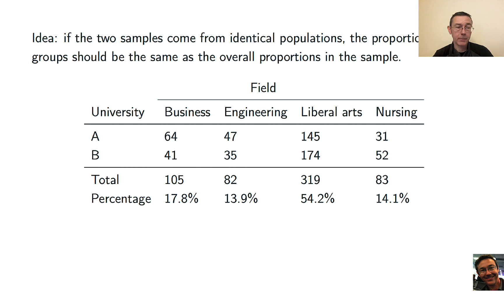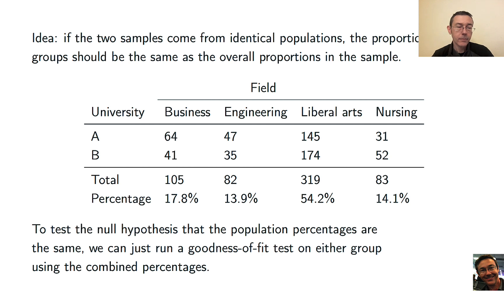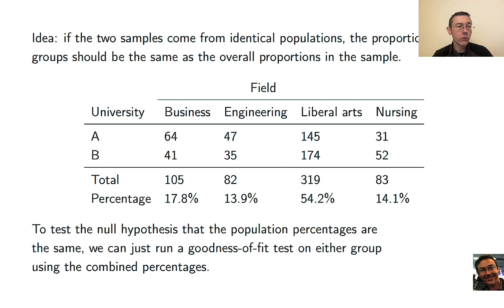I've expanded that contingency table a little bit and added some margins at the bottom. For instance, there are 105 individuals in business across both samples combined, which comes out to 17.8% of the overall number of people in these two samples. So to test the null hypothesis that population proportions are the same in both categories A and B, we can run a goodness of fit test on either group using those pooled proportions — 17.8%, 13.9%, and so on.